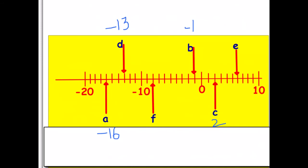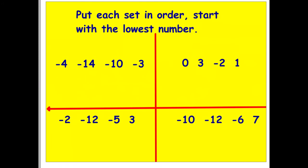For E: starting on zero, moving right for positive numbers — one, two, three, four, five, six — E is six. For F: close to negative ten but moving to the right gives positive, so counting — negative nine, negative eight — F is negative eight.